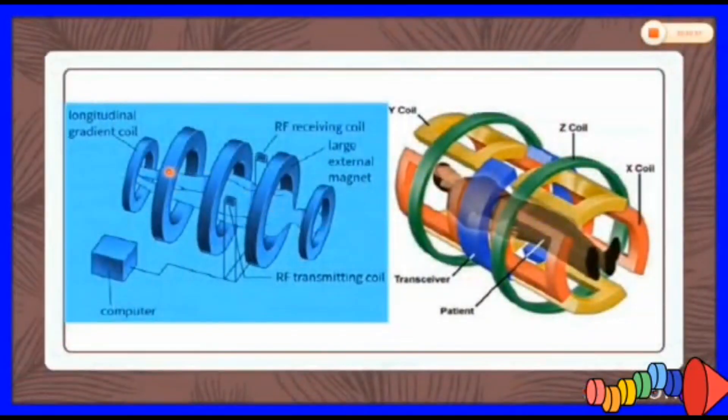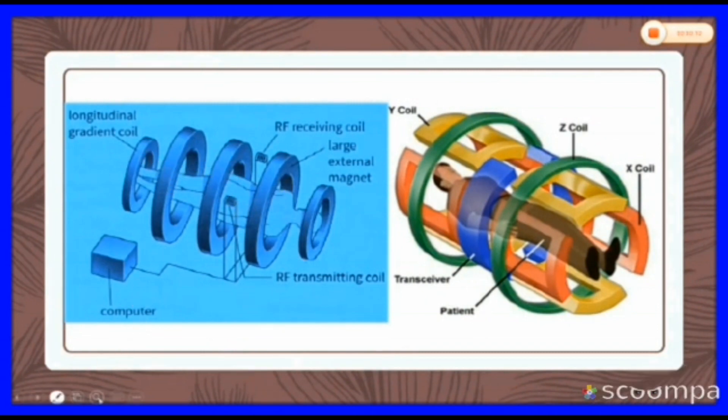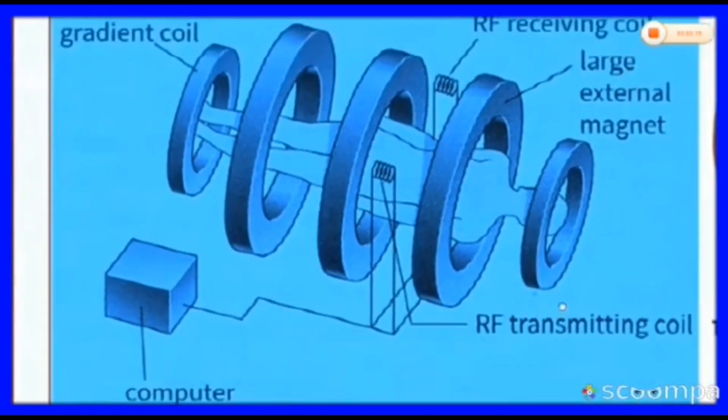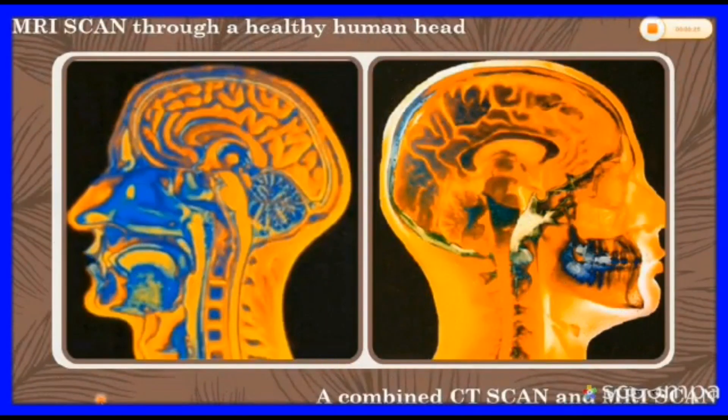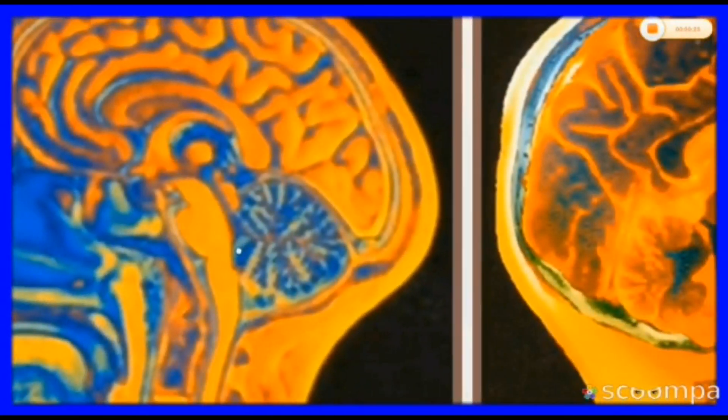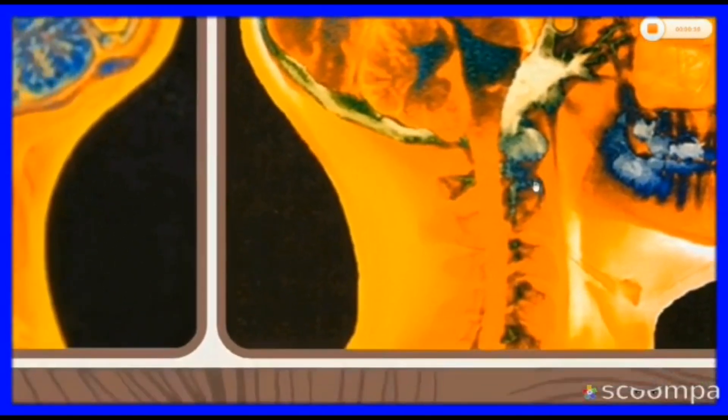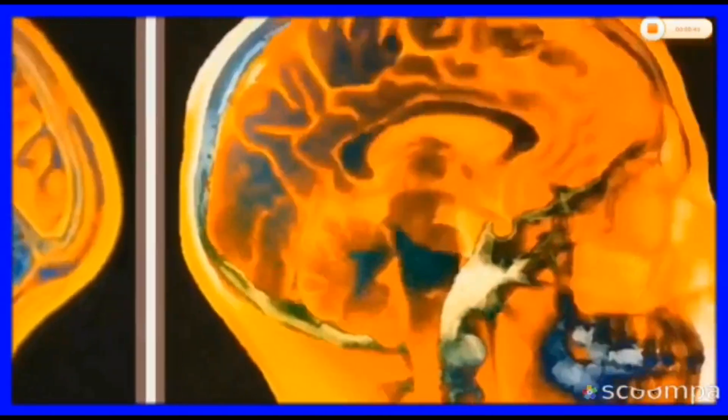A uniform magnetic field is produced by this large superconducting permanent magnet. Let's take a magnified view to see the details. See how the tissues which are revealed by MRI relate to the bone structure revealed by a CT scan.